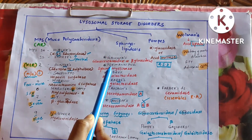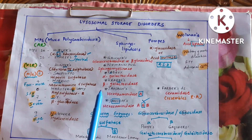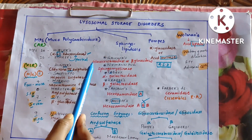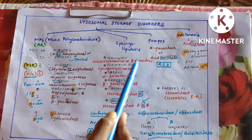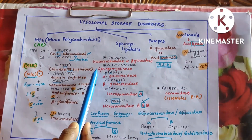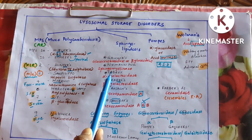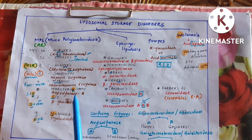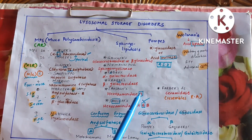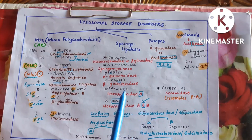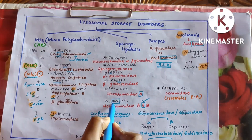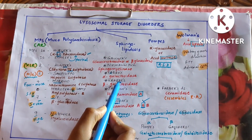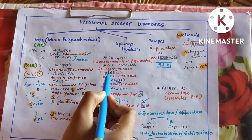Coming to sphingolipidosis — you don't need to remember these in order, just the names are enough. Gaucher's disease is because of glucocerebrosidase (otherwise called beta-glucosidase) deficiency. Niemann-Pick is sphingomyelinase. Fabry's is alpha-galactosidase, and Krabbe's is beta-galactosidase. Tay-Sachs and Sandhoff's are because of hexosaminidase deficiency.